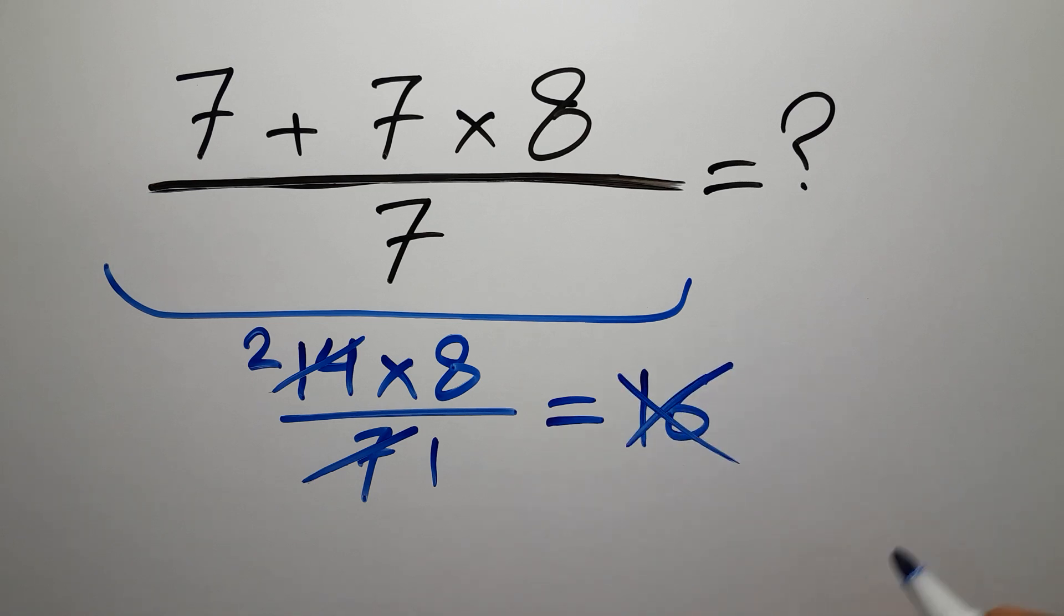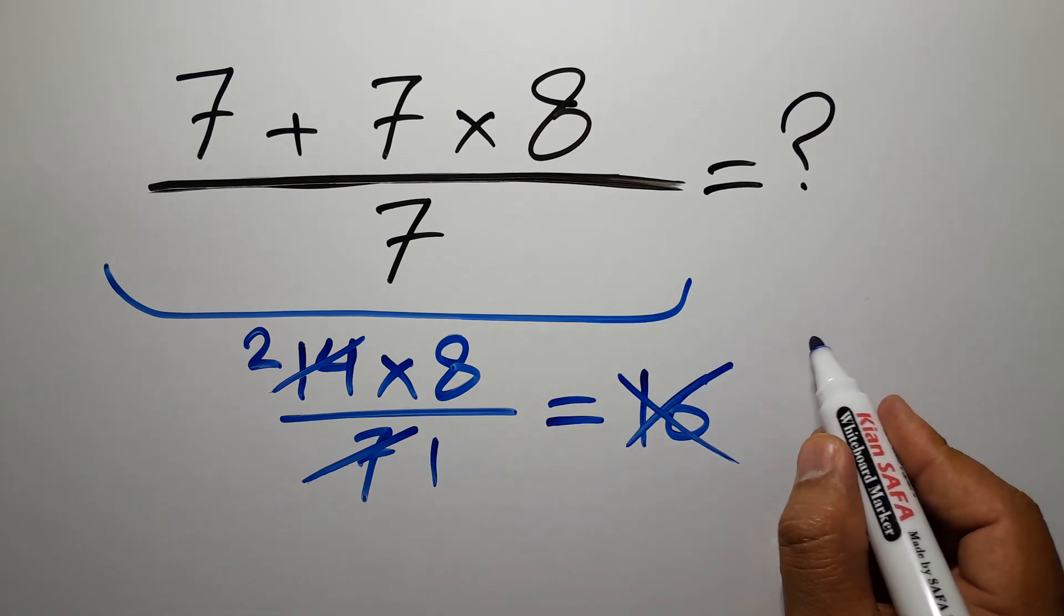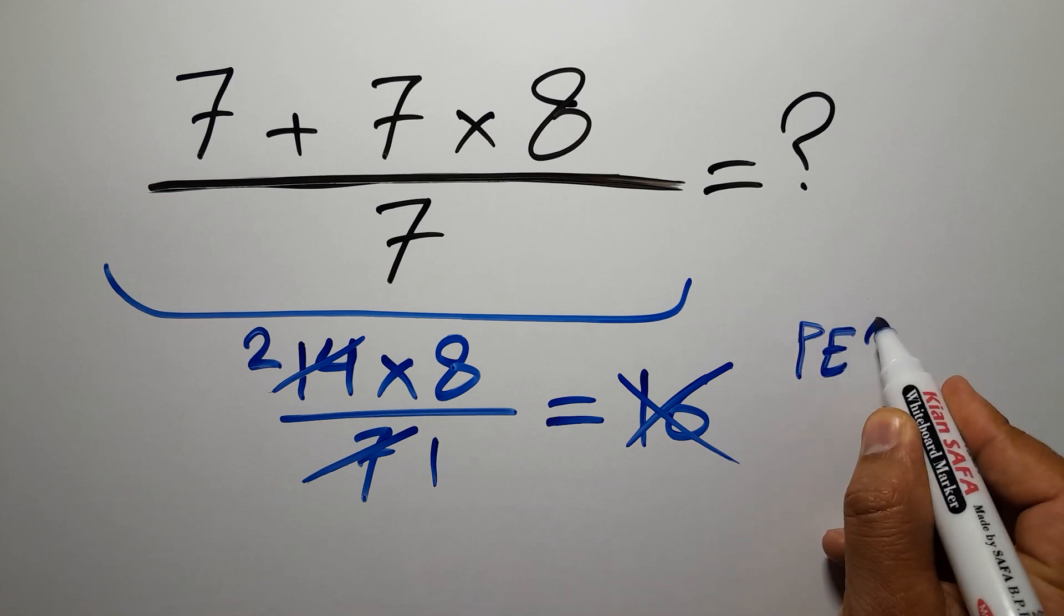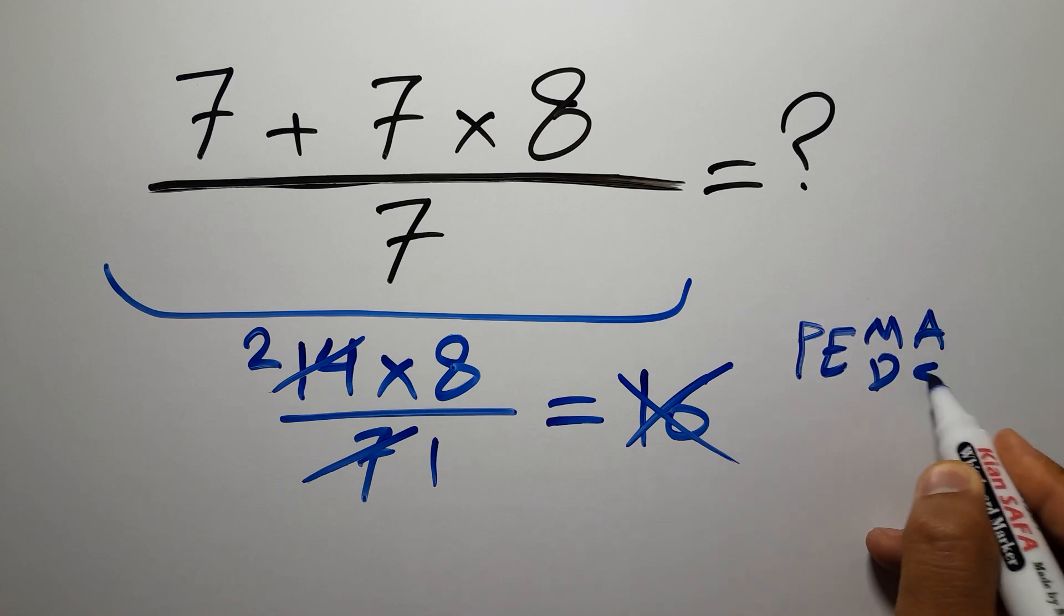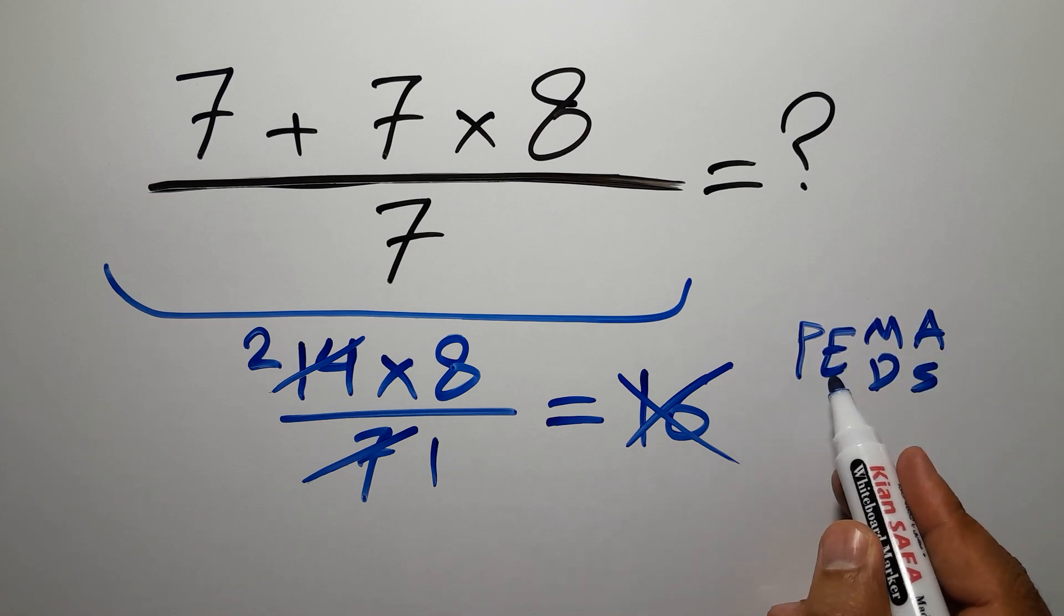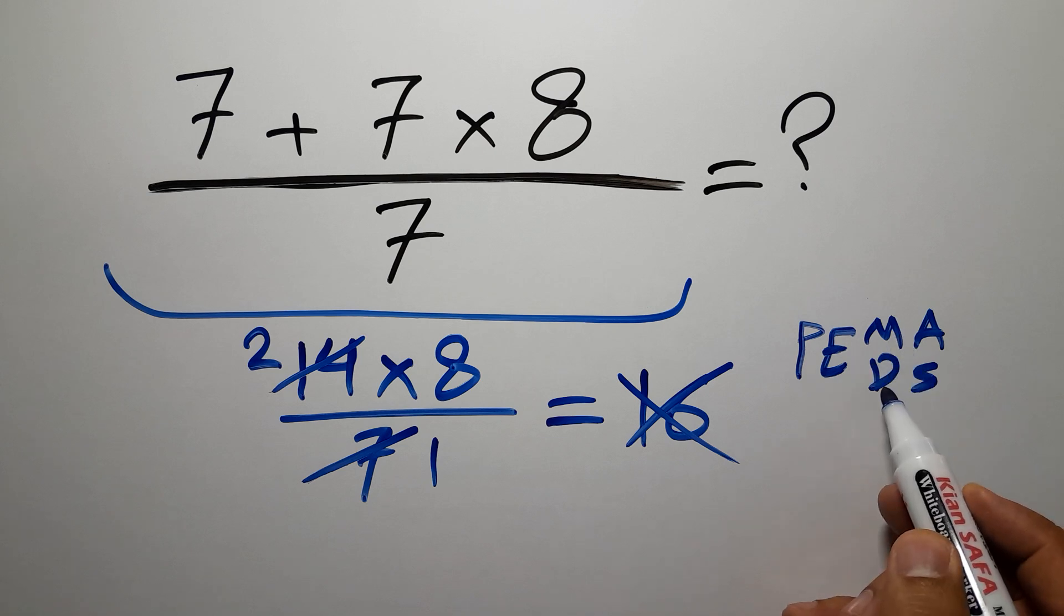This answer is not correct because according to the order of operations, which is PEMDAS: P stands for parentheses, E stands for exponent, M and D stand for multiplication and division, and A and S stand for addition and subtraction.